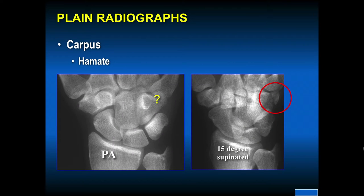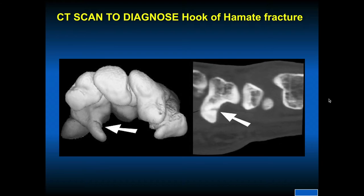Plain x-rays of the carpus and the hamate — this is a PA view. You can't see very well. You can get different supinated degrees or degrees of oblique to better show the fracture — an acute hamate fracture. CT scan is helpful in the diagnosis of a hook of the hamate fracture, as shown here: 3D on the left and a 2D CT on the right.